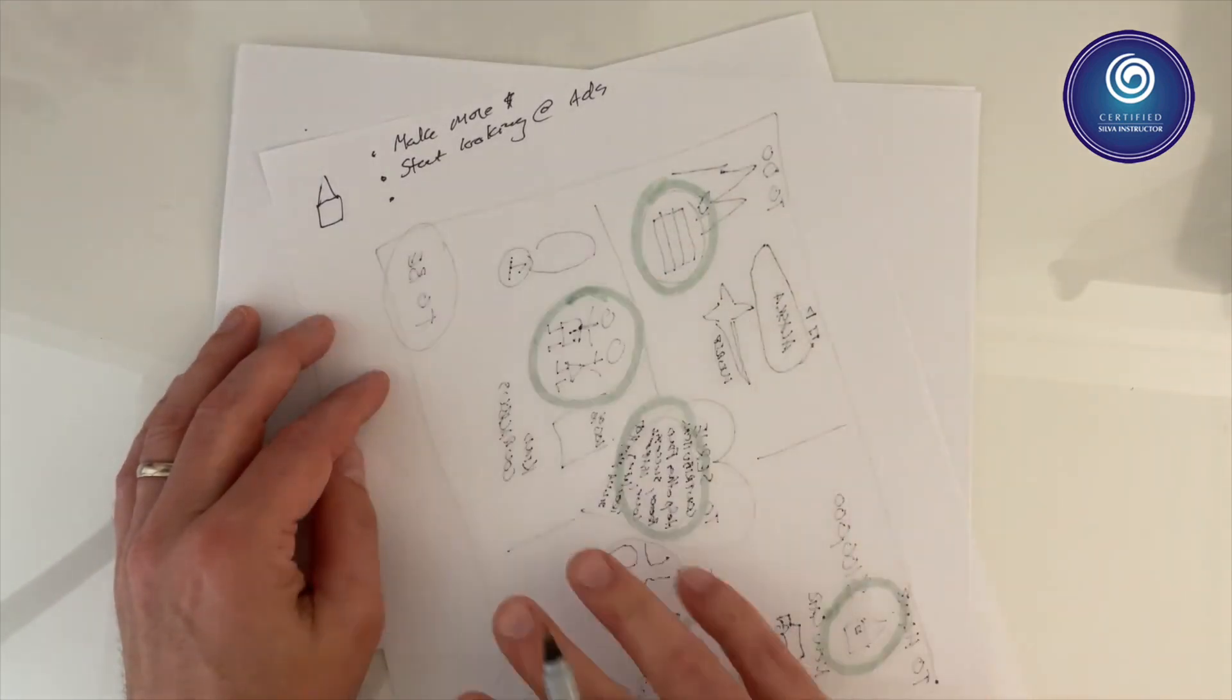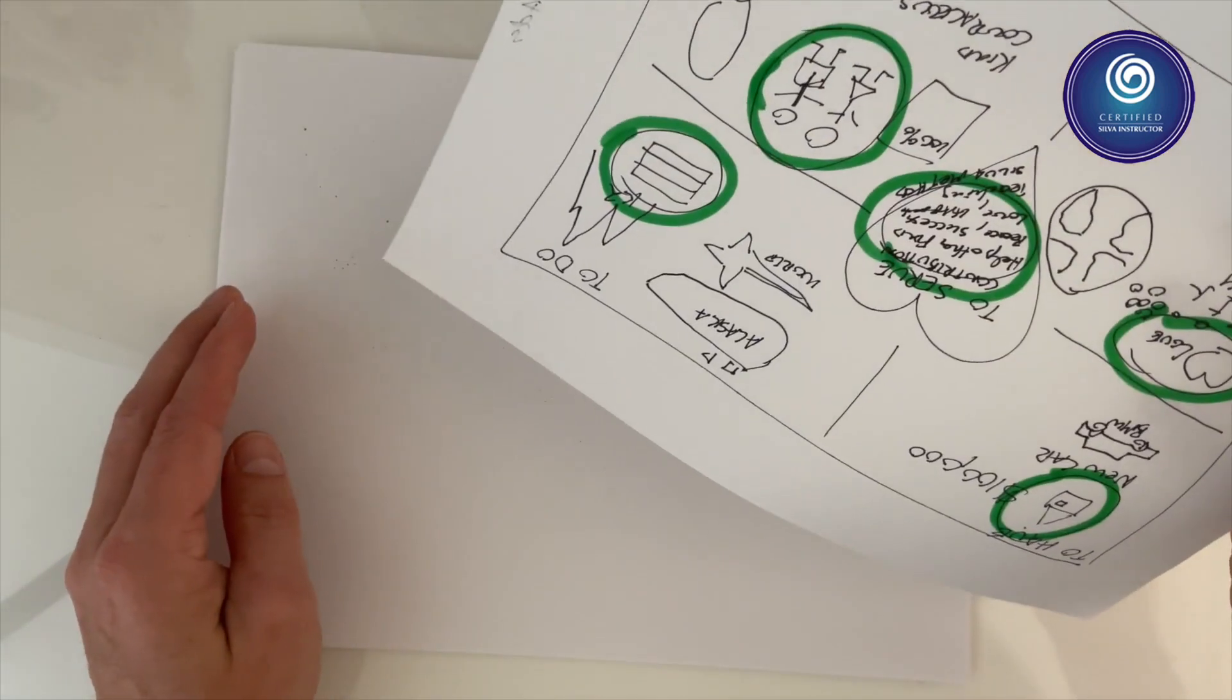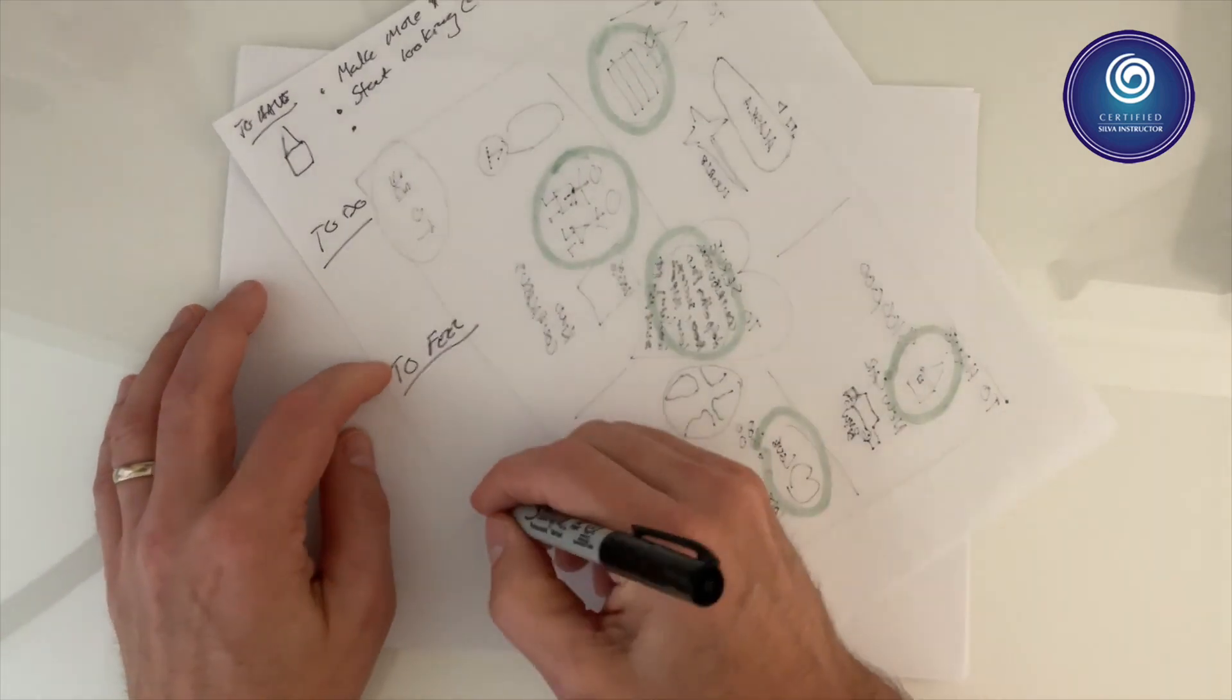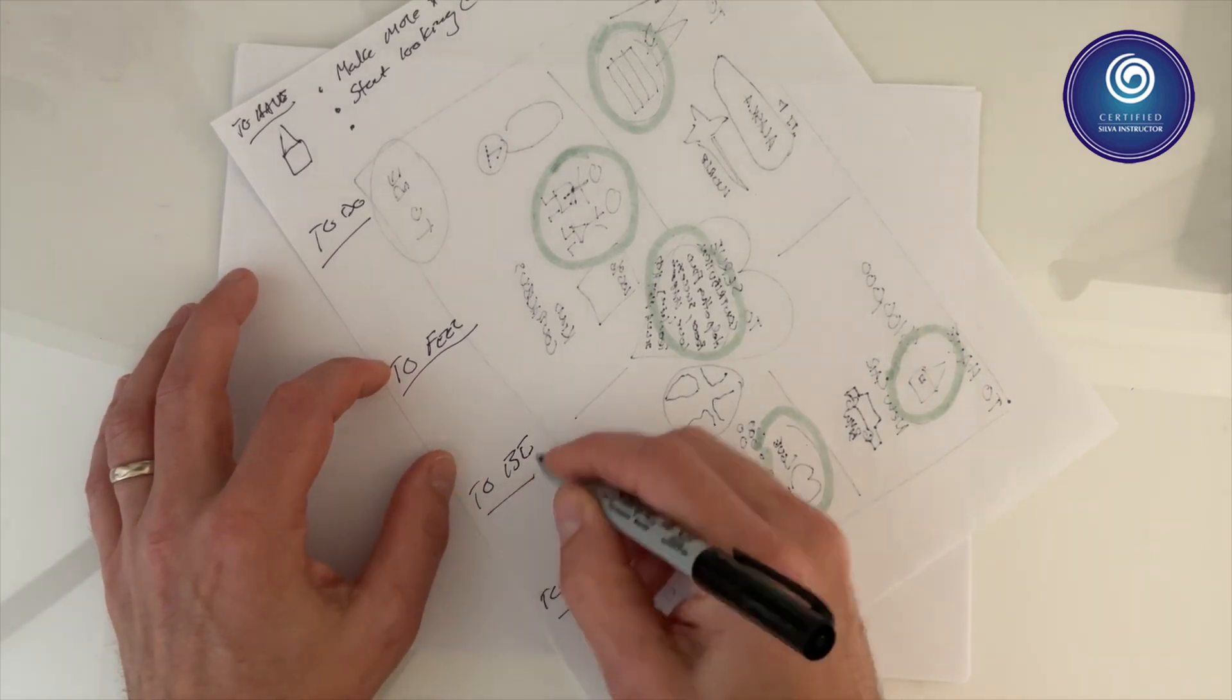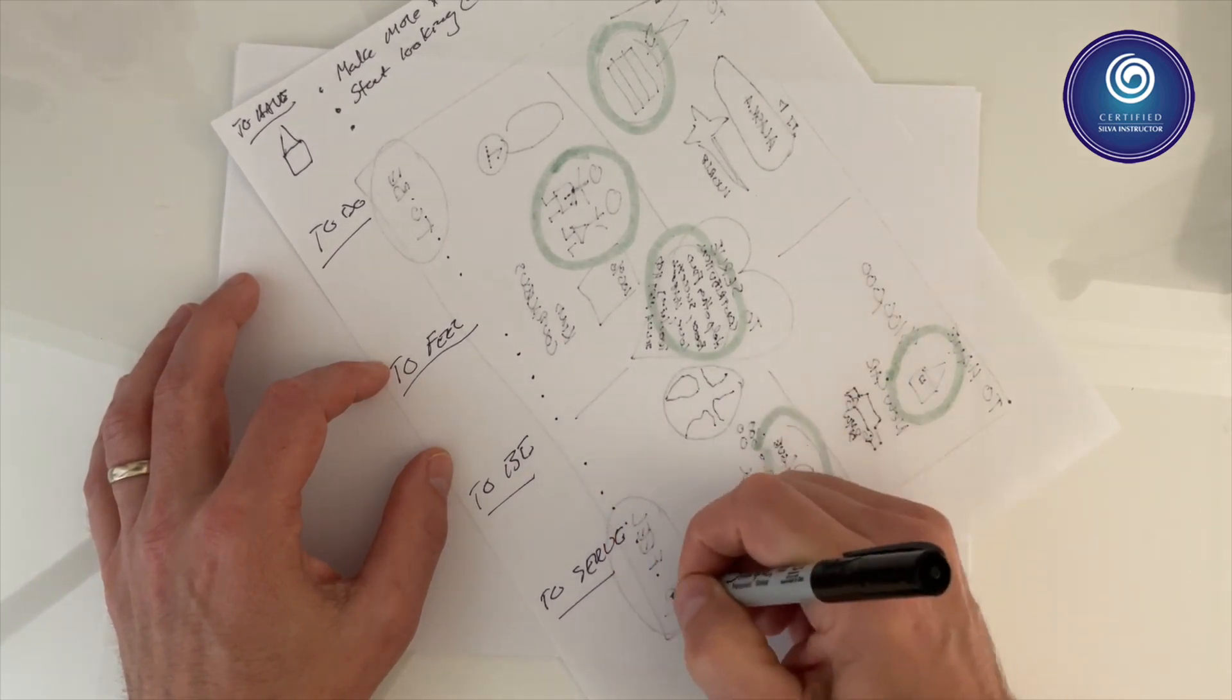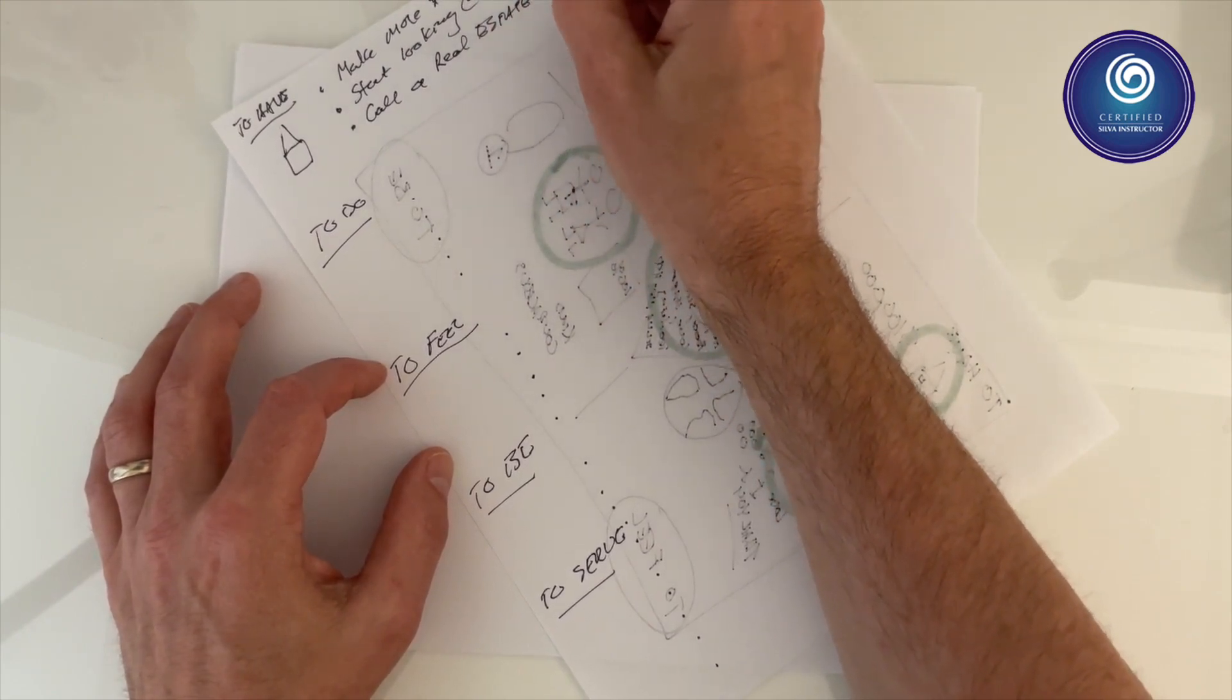So for each of your goals you're going to write down those steps that you can take to improve and accomplish the goal that you want. So you're going to have the to-haves, you're going to have the to-do's, you're going to have the to-feel, to-be, and to-serve. And you write down the goal here or draw it, and next to it write down three to five things that you can do now that will help you to get closer to your goal. These can be very simple things - I can call a real estate agent.